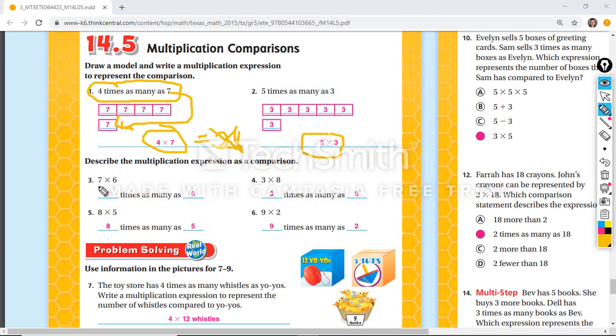Okay, the next ones, we're describing them. Seven times as many as six. Eight times as many as five. Three times as many as eight. Nine times as many as two. Those were easy for you. I know you did very well on those.